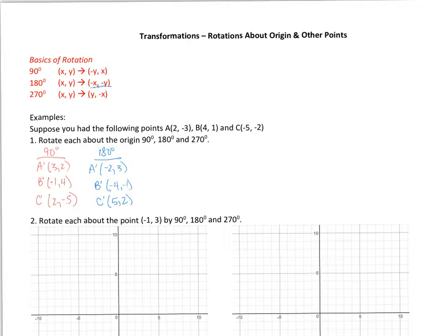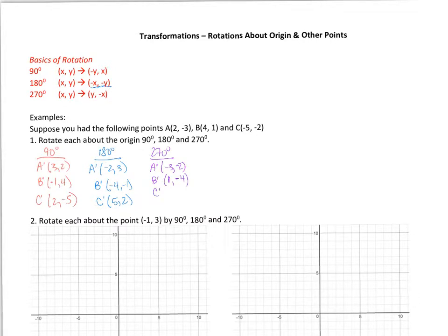Now let's do the final one: 270 degrees. The process is to switch X and Y, and put a negative on what was the X. So A prime ends up at (-3, -2). B prime ends up at (1, -4). And C prime ends up at (-2, 5). So those are the coordinates rotated about the origin at 90, 180, and 270 degrees.